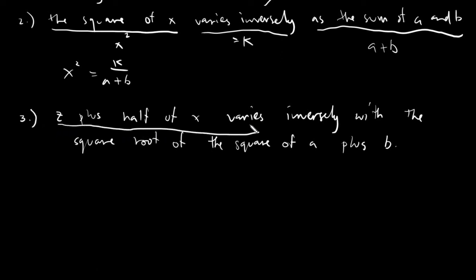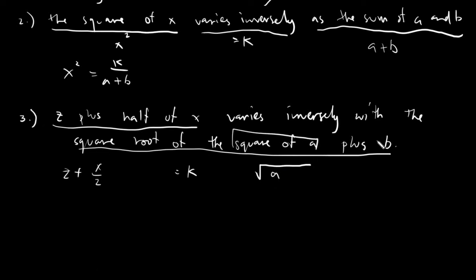It's one half times x or just simply x over 2. And then our varies inversely would be of course equals k, and then the last one would be the square root of the square of a plus b. So the square root, meaning this entire equation would be under the square root sign, and we need to get the square of a, this one, square of a, and plus simply b. The square of a plus b, giving us an equation of z plus x over 2 equals k over the square root of a squared plus b.